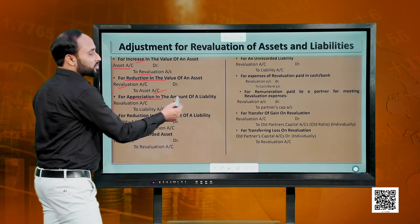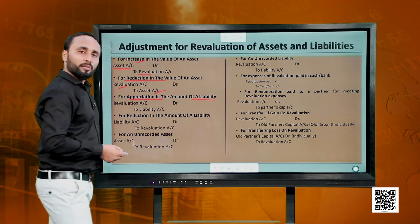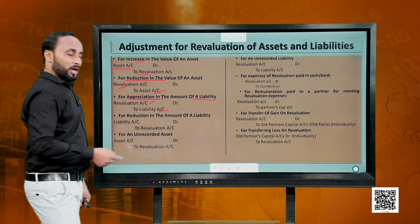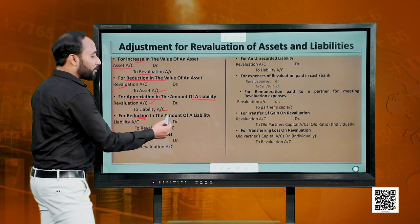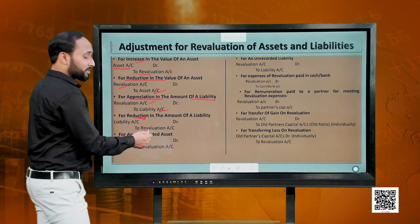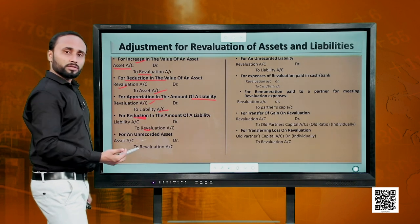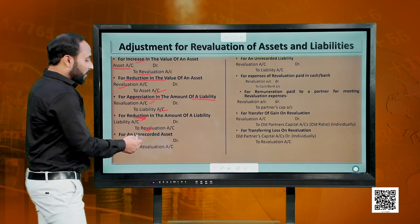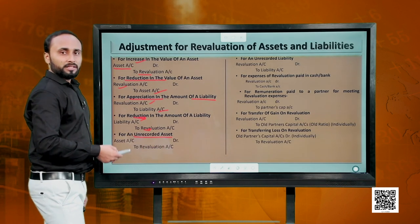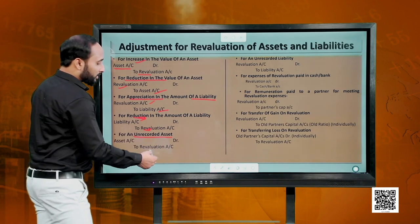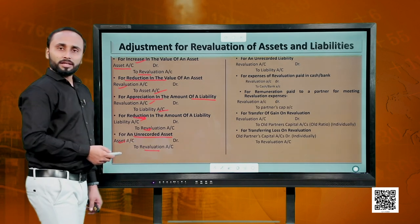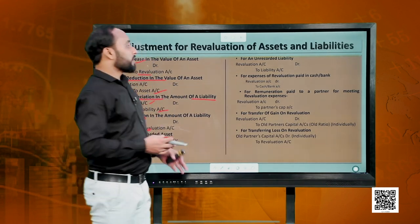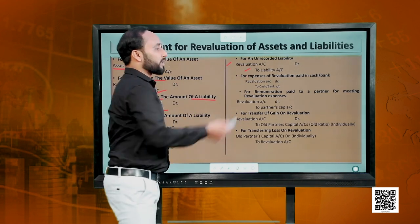When there is a reduction in the value of an asset, we debit the revaluation account and credit the asset account. When a liability increases, we debit revaluation and credit that liability. When a liability reduces, it is a benefit — we debit that liability and credit the revaluation account. When we find an unrecorded asset, we credit the revaluation account and debit the asset. When there is an unrecorded liability, we debit the revaluation account and credit that liability.